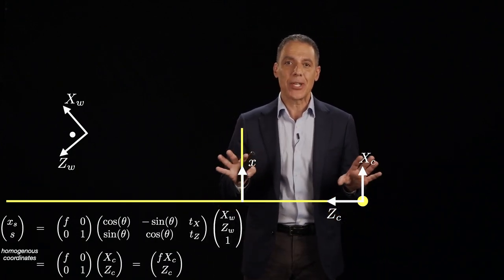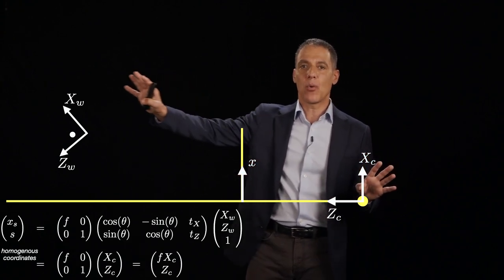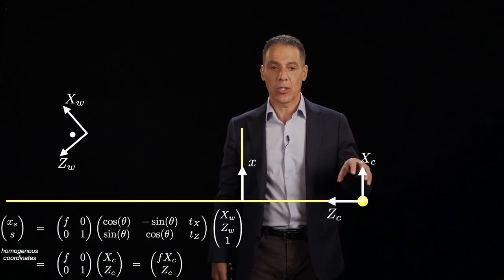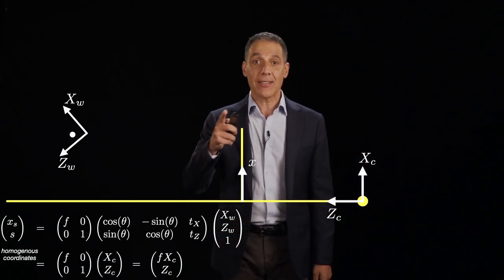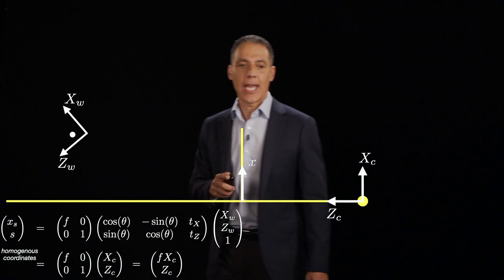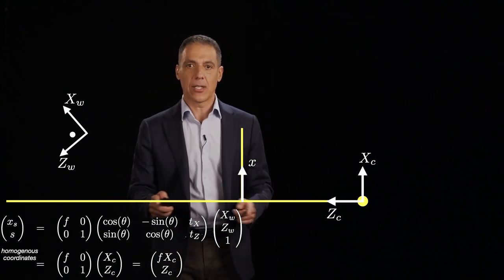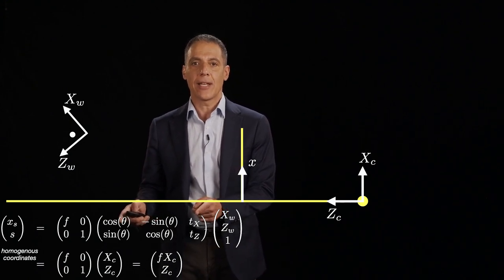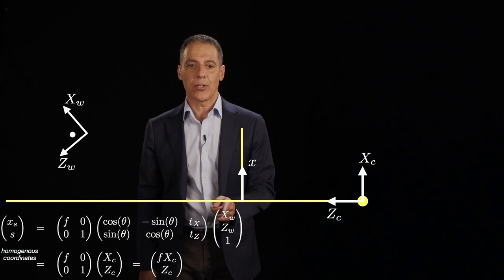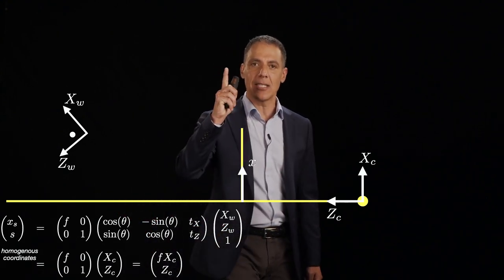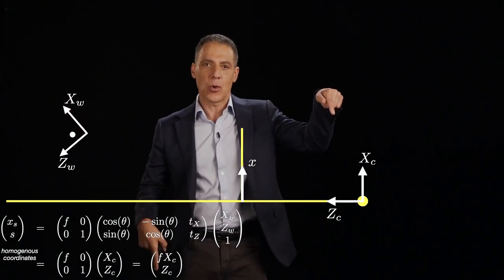Now I haven't actually taken a picture yet. All I've done is said I have a point out in the world coordinate system and I can specify it relative to the camera coordinate system using that rotation-translation matrix multiplication. If I do that matrix multiplication on world point XW, ZW, 1 in homogeneous coordinates, the result is XC, ZC — the point in the camera coordinate system. Now I have to project that into the sensor.